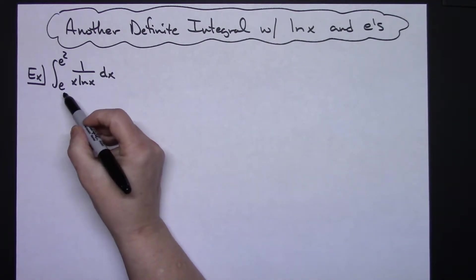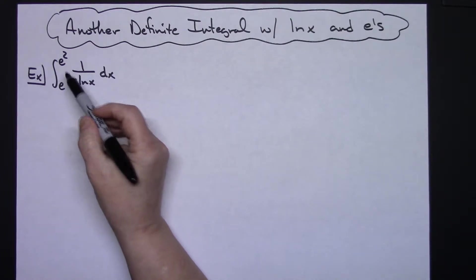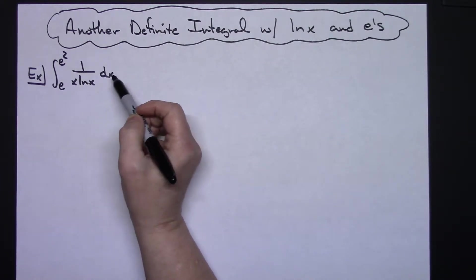To start with, I've got the integral running from e to e squared and we're integrating 1 over x natural log of x dx.